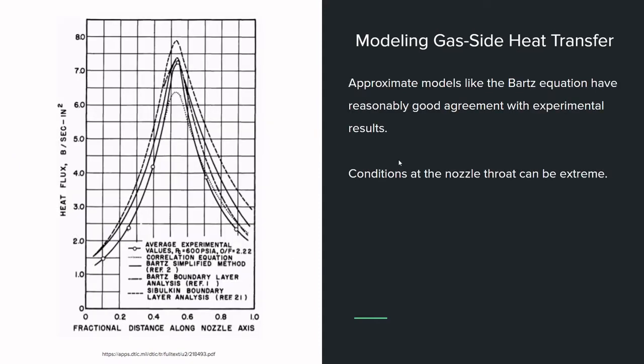Once you've got your nozzle inputs and you've got some kind of heat model, whether that's the Bart's method or something else, you crunch the numbers and end up with something like this.